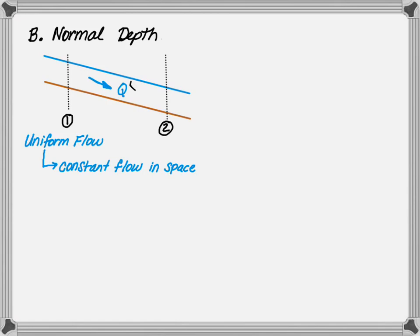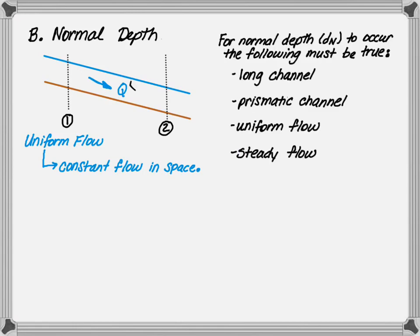When trying to determine normal depth, it is helpful to remember that flow is uniform within the channel. This means there's a constant flow within the channel spatially, resulting in a constant depth within the channel as shown in the graph. For normal depth to occur, the following must be true. First, the channel needs to be long. This is the case because over a long distance, the flow within a channel will try and reach normal depth as long as nothing obstructs or causes a change to the flow.